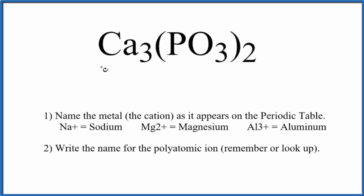In this video we'll write the name for Ca3(PO3)2. When we look at this, we note we have a metal and a group of nonmetals. This group of nonmetals is a polyatomic ion, so this is an ionic compound. For an ionic compound, we're going to write the name for the metal first.